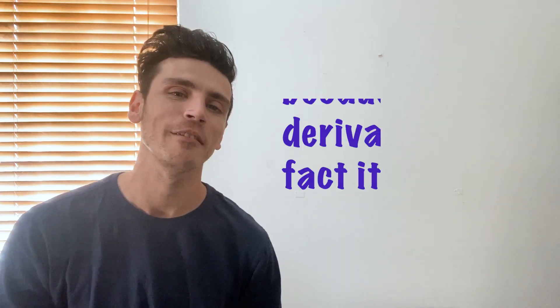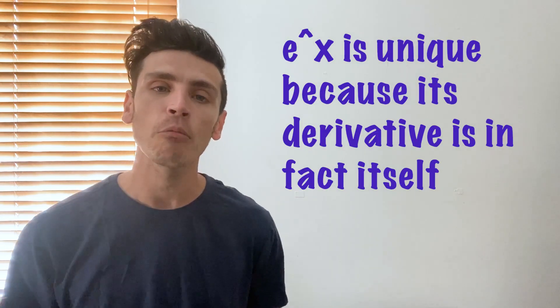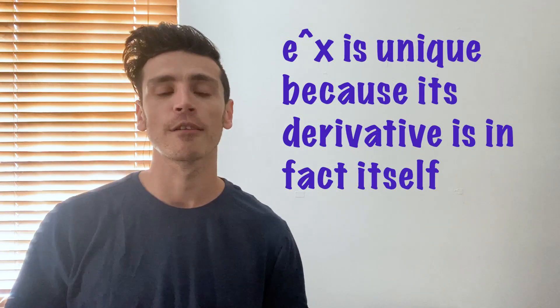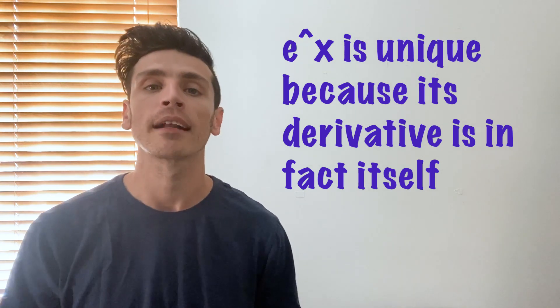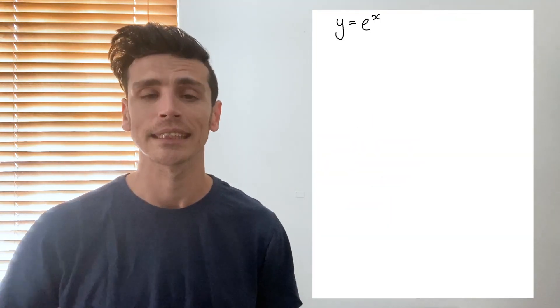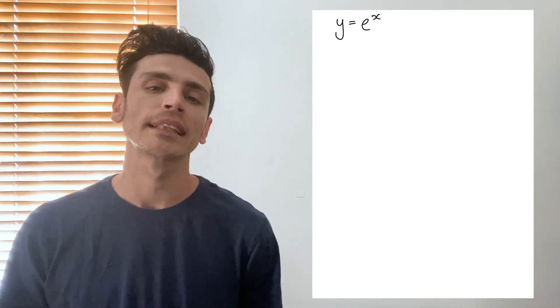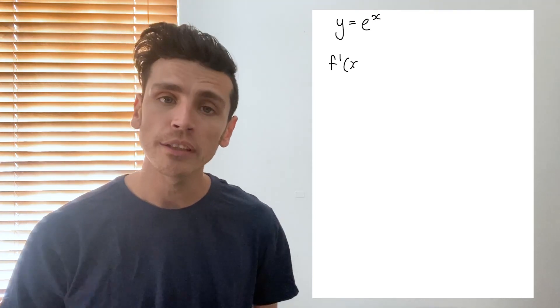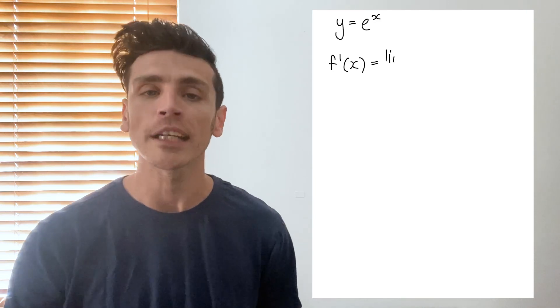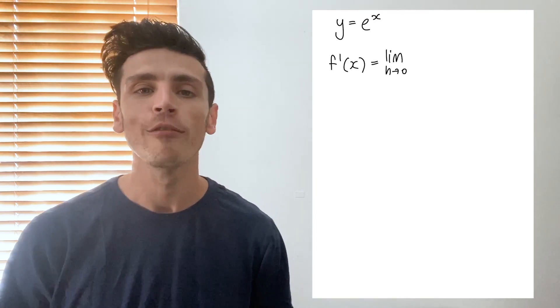The derivative of e to the power of x is a very unique one because this derivative is itself. Today we're going to use the limit definition of a derivative to prove that it is in fact e to the power of x. This proof is also what we use for the proof that the derivative of natural log x is in fact 1 over x.